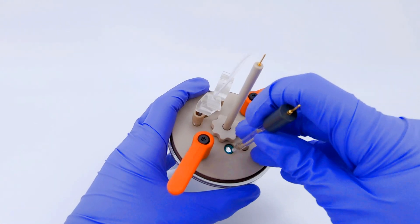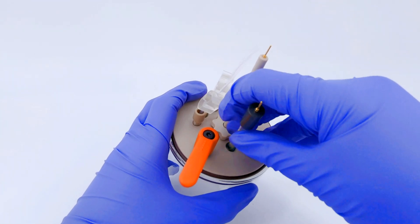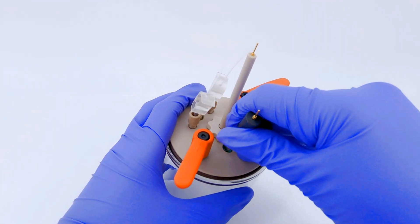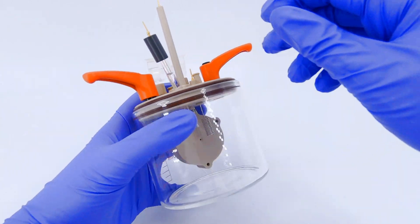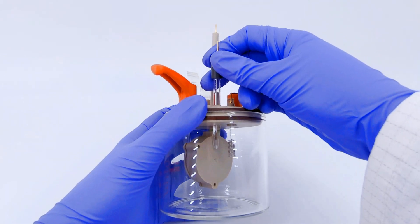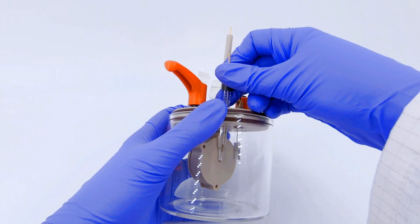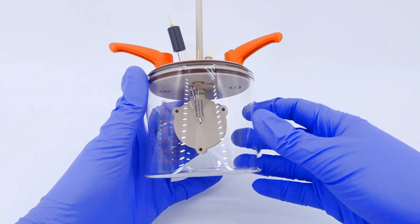Insert the reference electrode by twisting and applying pressure. The seal is tight, so be gentle with the electrode. Once in, adjust the height of the electrode such that the tip is placed close to the working electrode center.